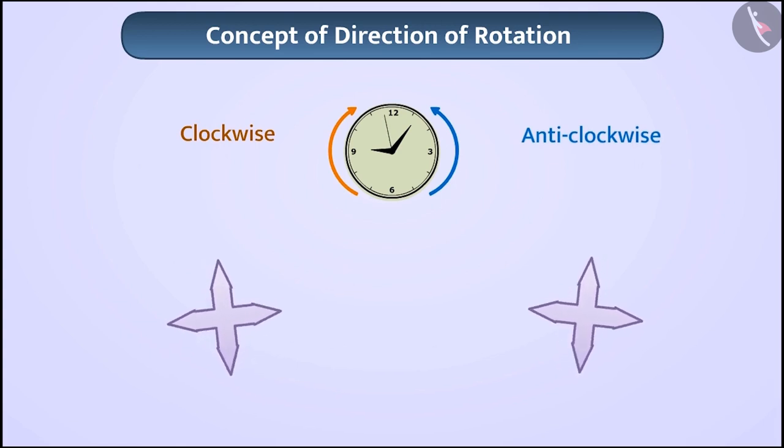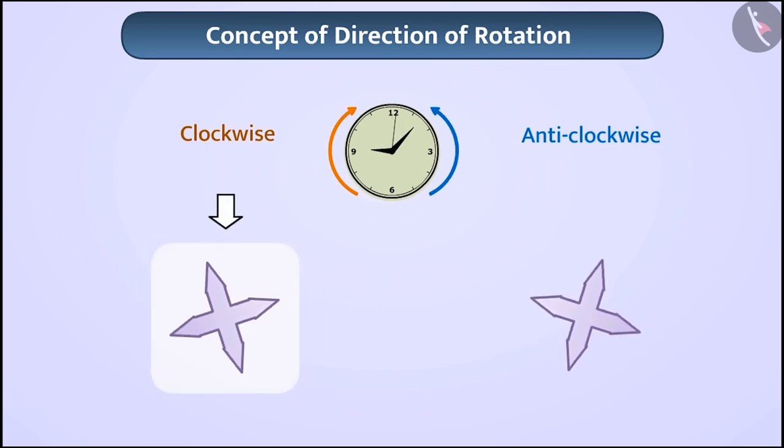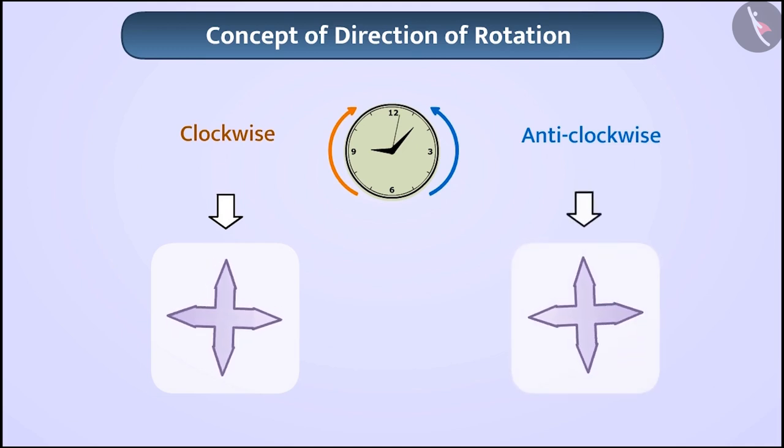Using this, we tell the direction of rotation of an object. Like here, this object is rotating clockwise, while this object is rotating in the anti-clockwise direction.